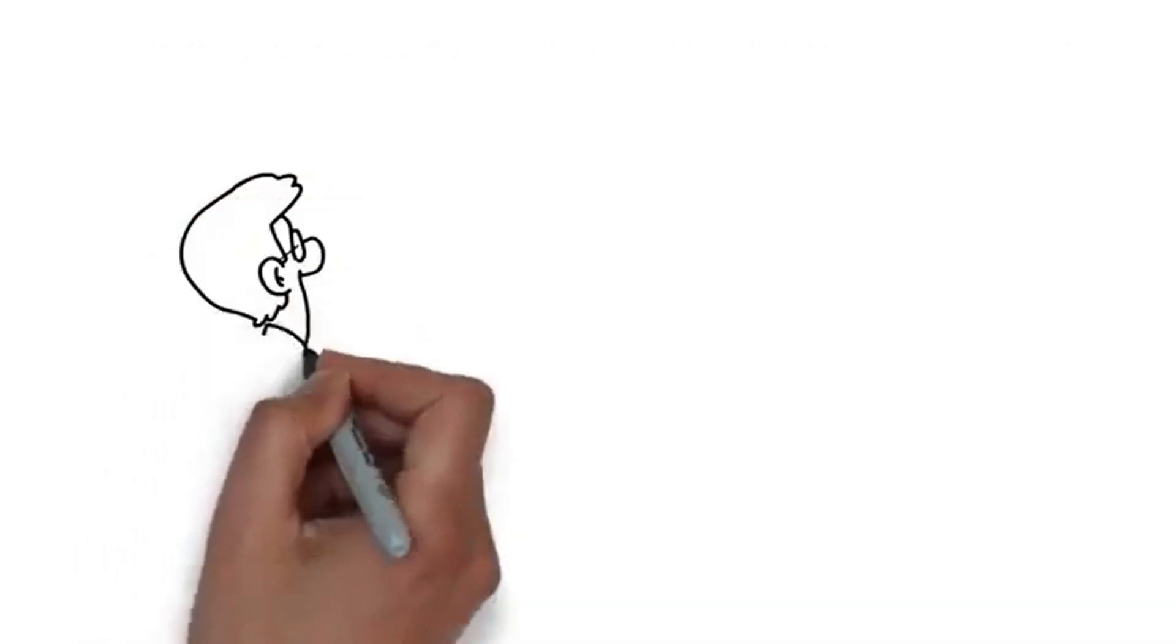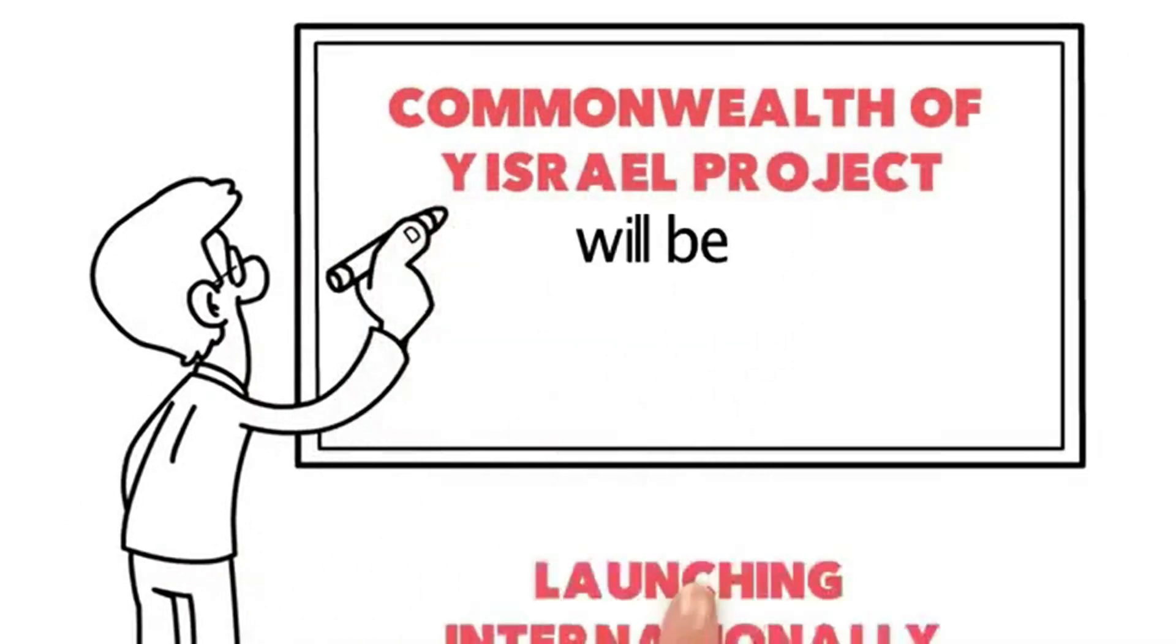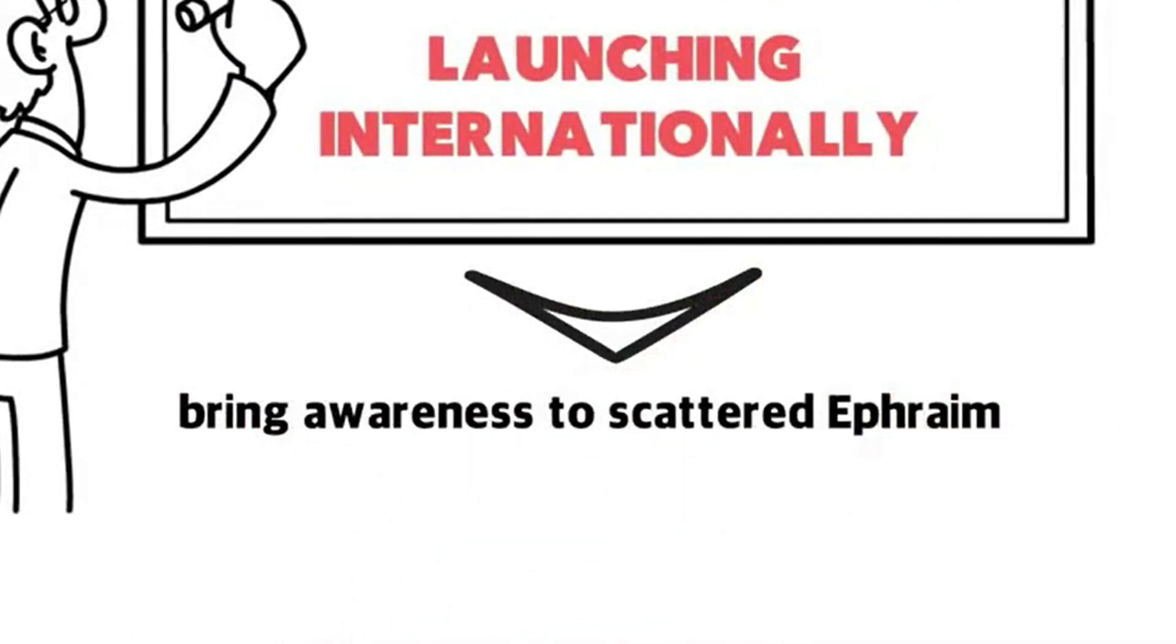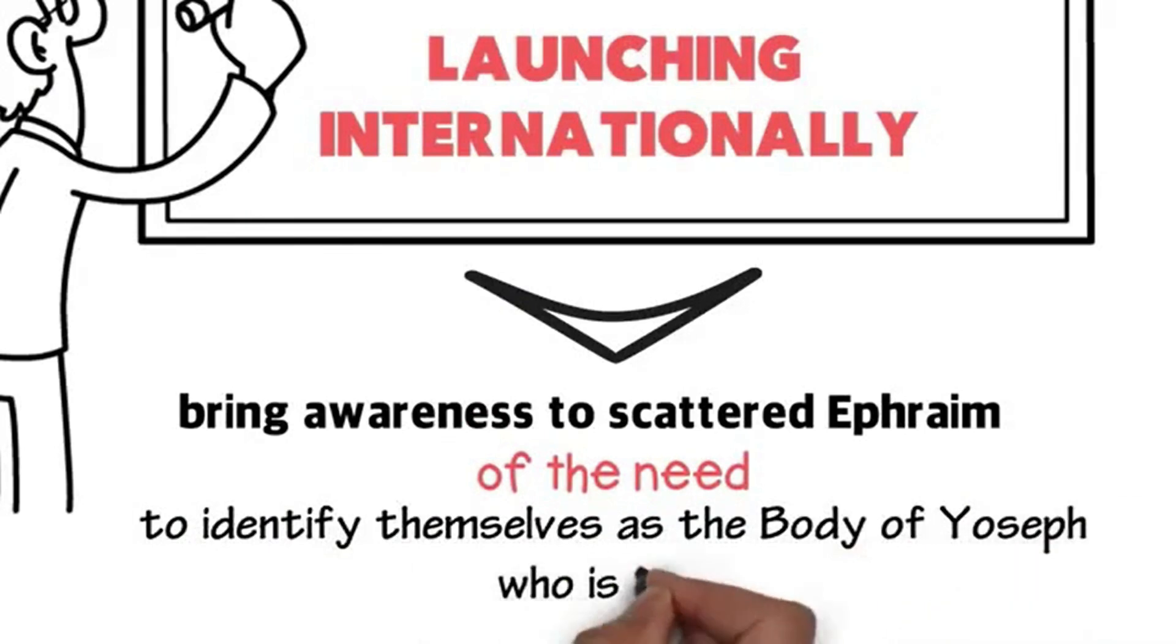The solution lies in a two-pronged awareness campaign that the Commonwealth of Israel has been launching internationally. One, to bring awareness to scattered Ephraim of the need to identify themselves as the body of Yosef who is alive.